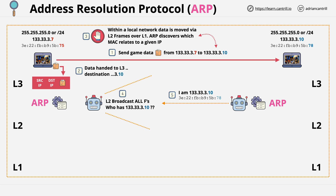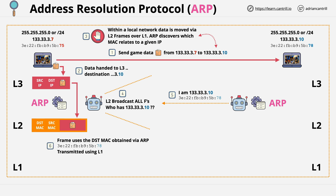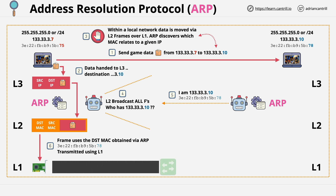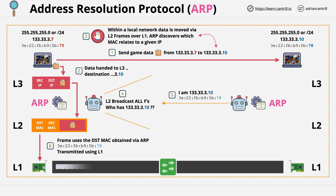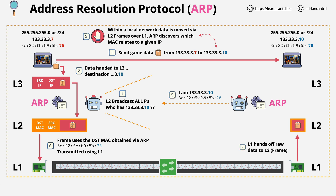So now the left laptop has the MAC address of the right one. Now it can use this destination MAC address to build a frame, encapsulate the packet in this frame, and then once the frame is ready, it can be given to layer 1 and sent across the physical network to layer 1 of the right laptop. Layer 1 of the right laptop receives this physical raw bit stream and hands it off to the layer 2 software, also on the right laptop. Now the layer 2 software reviews the destination MAC address and sees that it's destined for itself, so it strips off the frame and sends the packet to its layer 3 software.